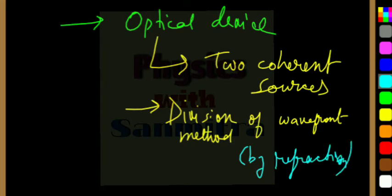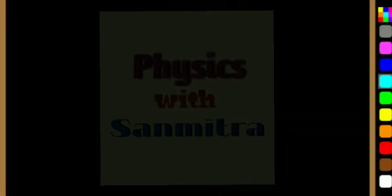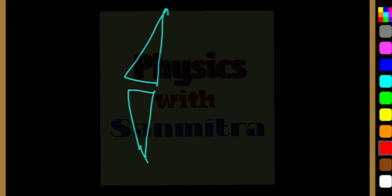We'll do it in a better manner than Young's double slit experiment. Let me show you how. First of all, let us understand what is a biprism. A biprism is when I have one prism and another prism, and both the bases are joined together.